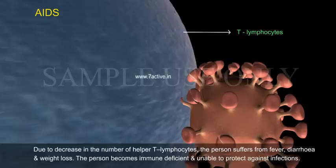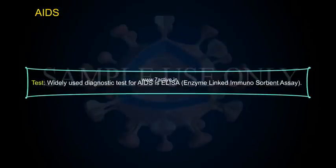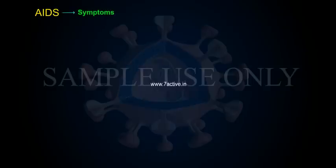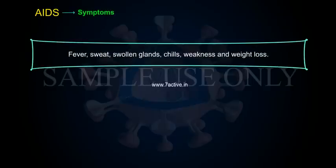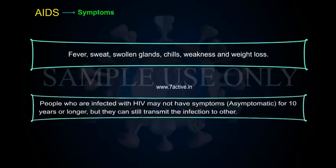Due to the decrease in the number of helper T lymphocytes, the person suffers from fever, diarrhea, and weight loss. The person becomes immune deficient and unable to protect against infections. The widely used diagnostic test for AIDS is ELISA — Enzyme-Linked Immunosorbent Assay. Symptoms include fever, sweats, swollen glands, chills, weakness, and weight loss.